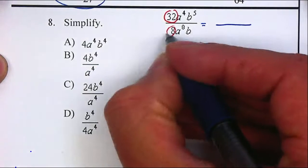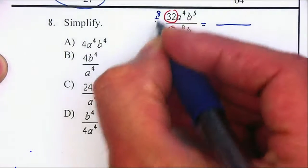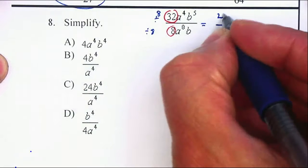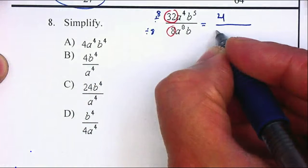Divided by 8. We're going to divide it by 8. 32 divided by 8 will give me a 4. 8 divided by 8 will give me a 1.